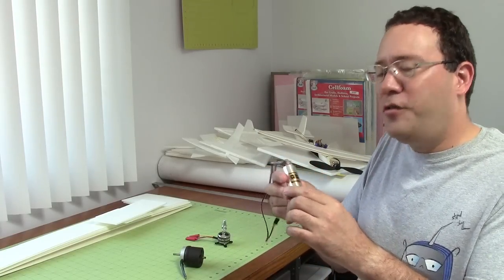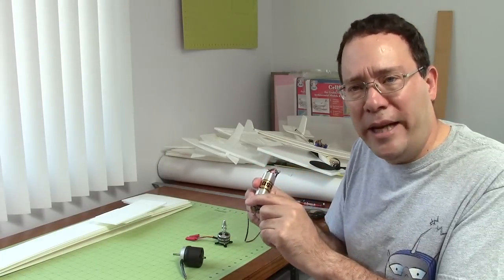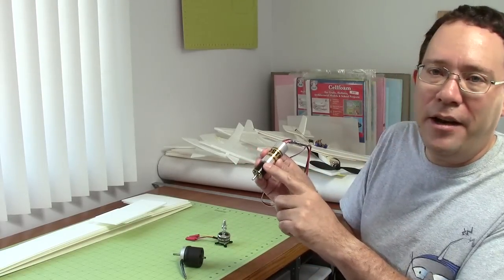So to get useful power out of an in-runner, you have to use a gearbox with it. The black part in front of the motor here is a planetary gearbox.